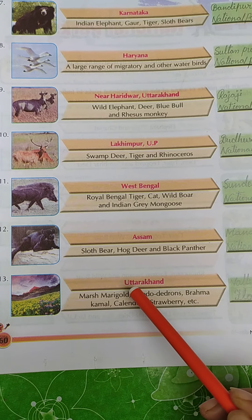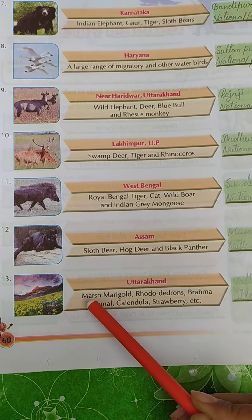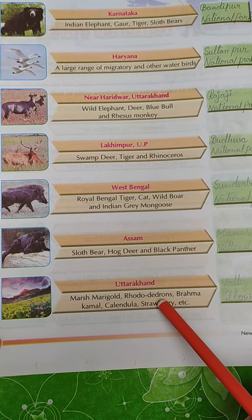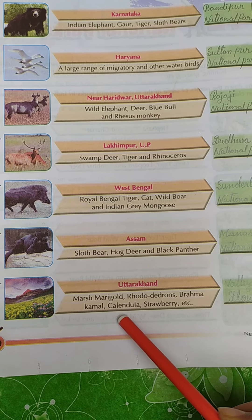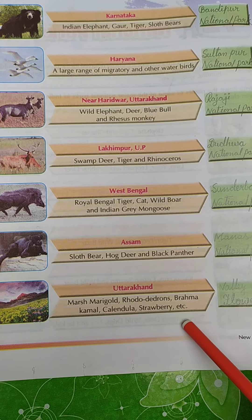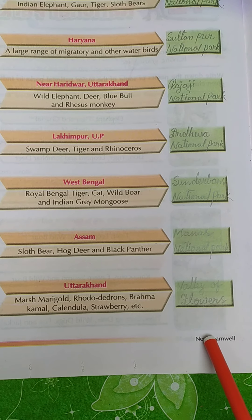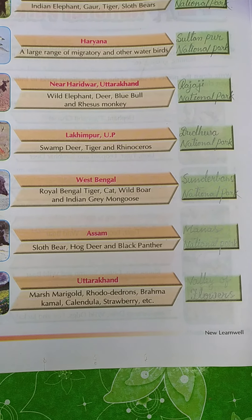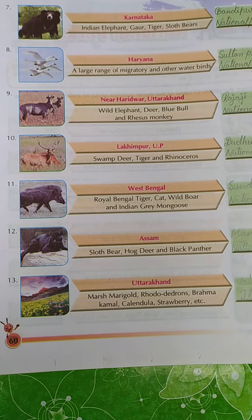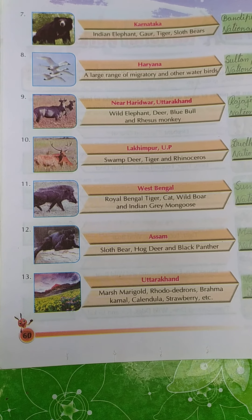Number thirteen. State: Uttarakhand. Notable flora include musk, marigold, rhododendrons, Brahma Kamal, calendula, strawberry, etc. The name of this national park is Valley of Flowers. Students, you have to study about these 13 national parks in India in detail.